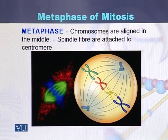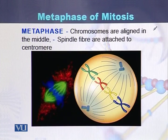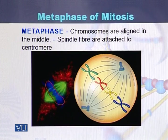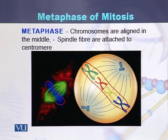This is another pictorial view of the metaphase of mitosis. In this diagram we can see that chromosomes are lined up in the middle in the form of a line. In the large diagram, chromosomes are present in the middle, while the spindle fibers are attached to the centromeres and on the other hand attached to the centrioles.